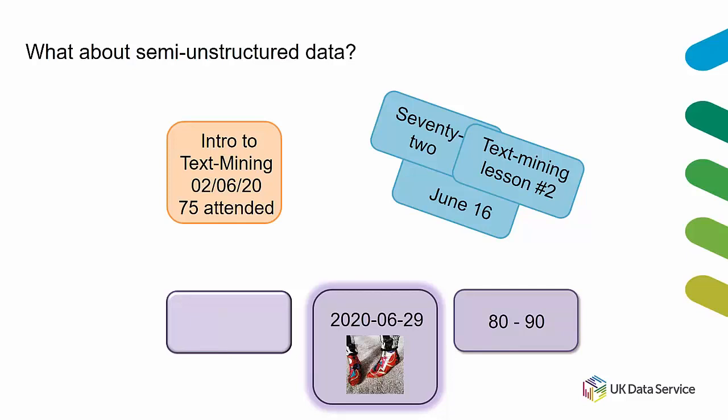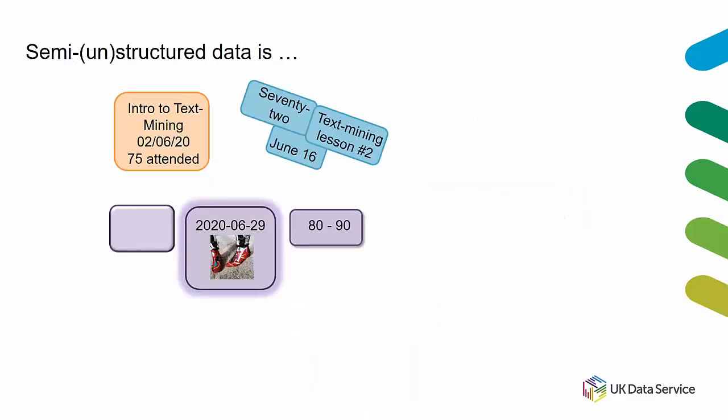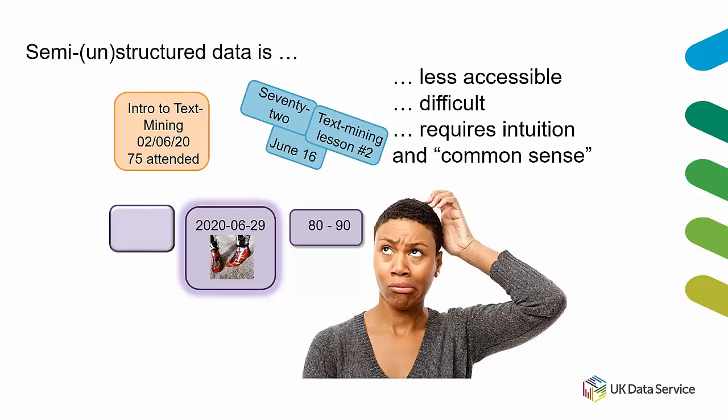The key point is that unstructured data is actually semi-structured, or semi-unstructured — there's still a lot of structure, but it's less coherent, orderly, and tidy. It's less immediately accessible. It requires a lot of intuition and common sense to work with, and intuition and common sense are not really available to computers. So getting a computer to do this is very difficult — but that's what text mining and data mining are about.